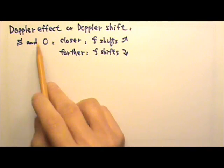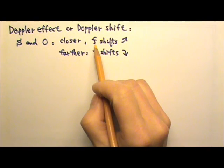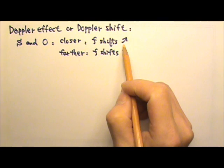If they are getting closer, then the frequency observed by the observer would shift higher than the original frequency.